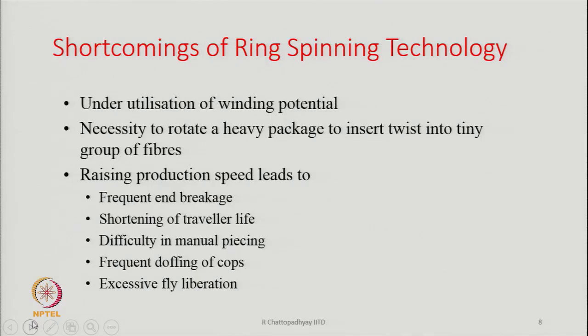And the last shortcoming is excessive fly liberation. This is also a serious problem — fly means very short fibers which will be coming out from the front roller nip. The fly will contaminate the atmosphere. The fly will get picked up by a rotating yarn balloon and it may cause neps. The fly will also fall and settle on the ring and on the machine, and therefore there is every possibility that as a yarn is being spun, the balloon will pick up these fibers which are floating around and this will create some kind of fault in the yarn. So this is also a serious problem.